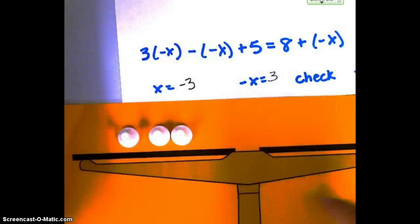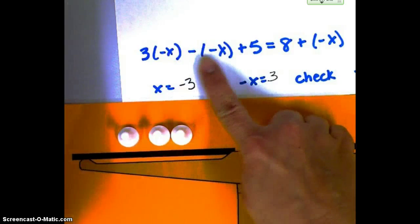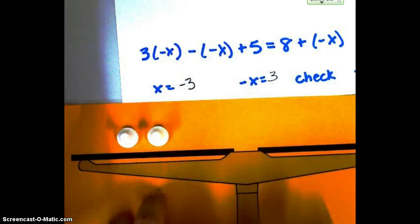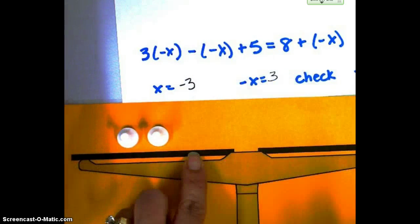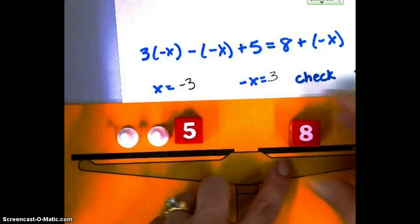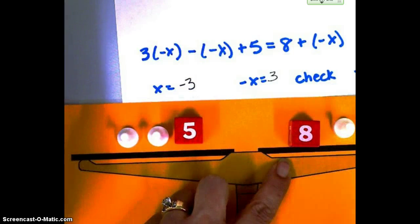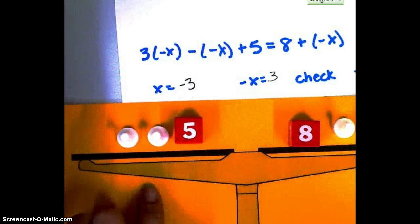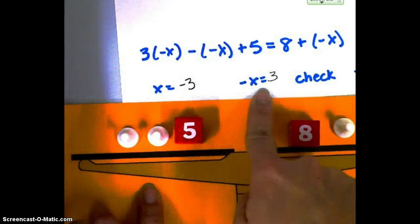Three negative x. And then I had to subtract one because it says 2. And then I had a 5. And then on this side, I had the 8. And a minus x.